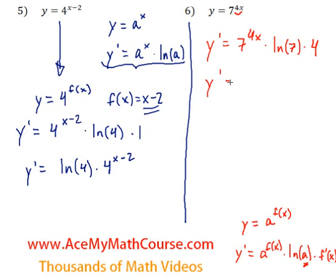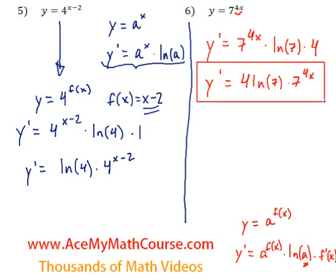Okay, so y prime is just going to be 4 ln of 7 times 7 to the power of 4x. And that's it. There we go.